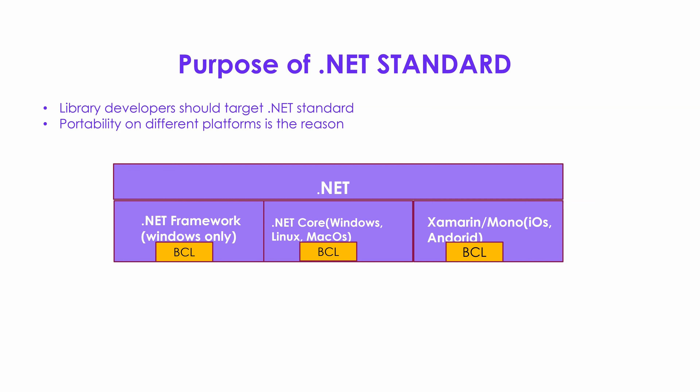As a library developer, my aim is that once I have developed a library, I want other developers to use that library on as many platforms as possible. If I have developed a library on .NET Core, I would like developers to use that library also on .NET Framework, Xamarin, and Mono. So .NET standard targets these library developers — portability is the main reason that Microsoft brought .NET standard.